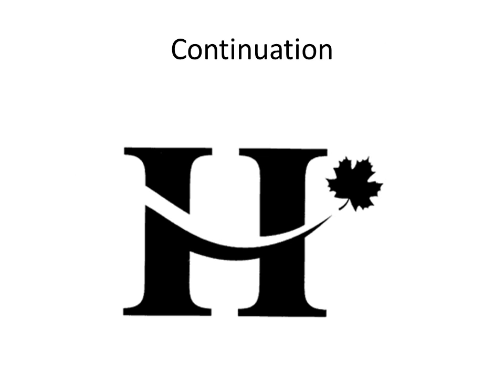Continuation occurs when the eye is compelled to move through one object and continue to another object. Continuation occurs in the example because the viewer's eye will naturally follow a line or curve. The smooth flowing crossbar of the H leads the eye directly to the maple leaf.